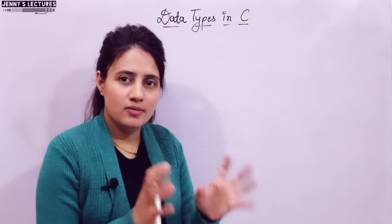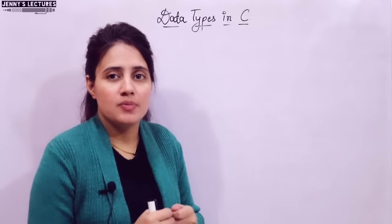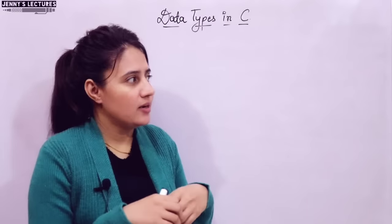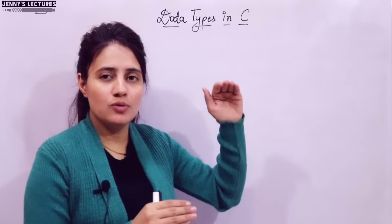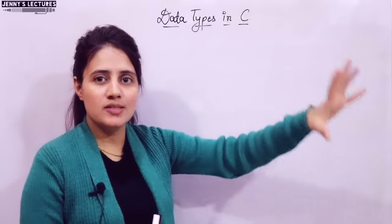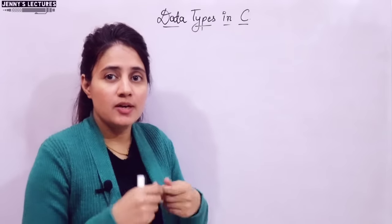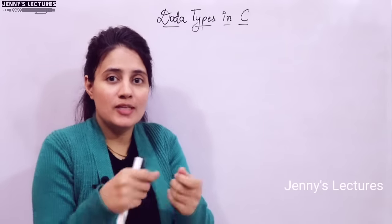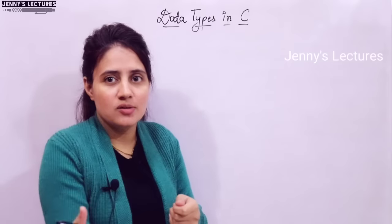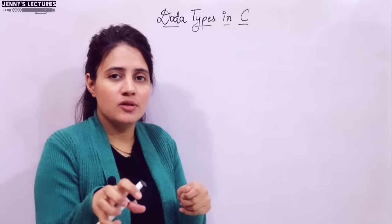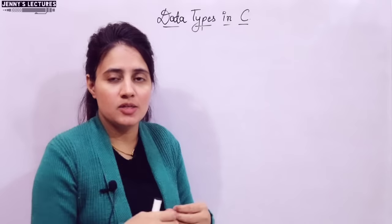First of all, let us take an example of why we need data types. Take an Almirah — it has different separate spaces. Like if you want to put clothes, there is separate space for that. There is one drawer also where you can put some other things. There is also a little drawer within that, where you can put your luxury items or cash. So according to requirements, you take the space you need.